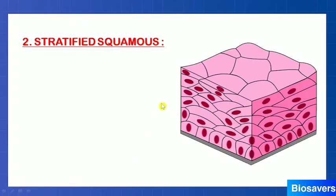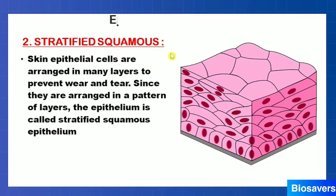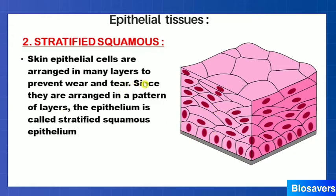The second type of epithelial tissue is stratified squamous epithelium. This is also a squamous epithelium, but the cells are stratified into many layers. They are present in parts where there is the most wear and tear, meaning areas of exposure. For example, our skin is the most exposed part, so skin needs to be very strong to protect our internal organs. That is why stratified squamous epithelium is present in our skin — it prevents wear and tear.